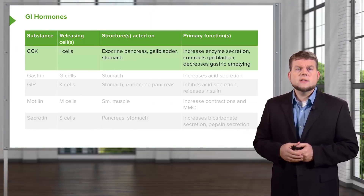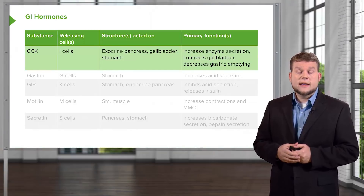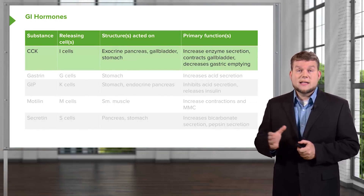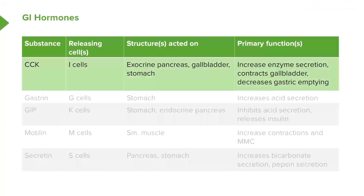The first is cholecystokinin, released by I cells. These increase enzymatic secretions and contraction of the gallbladder, as well as causing the pyloric sphincter to constriction.